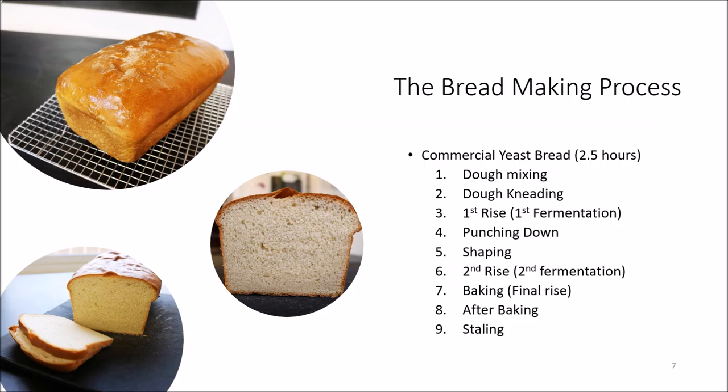Now that I've finished discussing the amendments, I'll be getting into the details of the bread making process. For this video I'll be focusing on a commercial yeast bread — typically called white bread or sandwich bread in the United States or Canada — usually made with AP flour or bread flour and commercial yeast, with a short fermentation time of about two to two and a half hours.